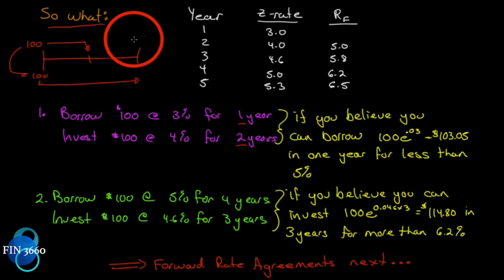We're borrowing at three percent for one year and we're investing at four percent for two years. The spot rates imply that there is a five percent rate in the second year. So here's the deal. Our hundred dollars will grow at four percent over two years. This hundred dollars loan will balloon up to one hundred and three oh five at the end of one year. So we have to pay back one hundred and three oh five. So the trade makes sense if we can borrow one hundred and three oh five here for this period of time for less than five percent. Because the spot rates imply that the forward rate is five percent. If it comes in if the real rate comes in less than five, the loan balance will be less than the investment will grow to. And we make the spread on that.